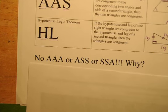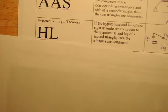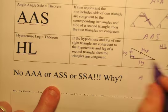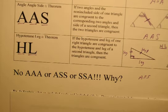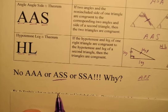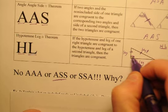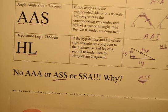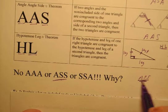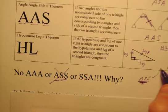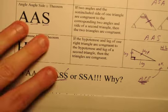What about SSA? That's just ASS rearranged, so it doesn't work either. However, some of you might be thinking about the HL theorem — that is technically Angle-Side-Side. And you're right, it is. But the stipulation is: you can only use it if the triangle is a right triangle. In general, ASS or SSA doesn't work — you can only use it if the triangle is a right triangle.